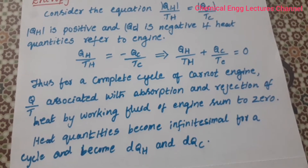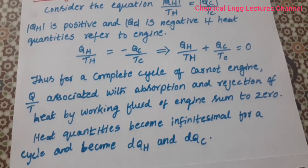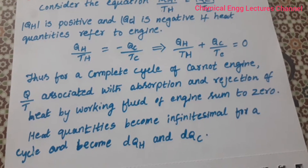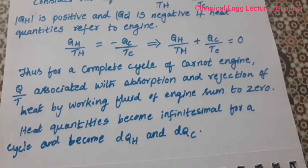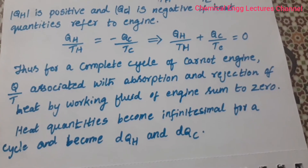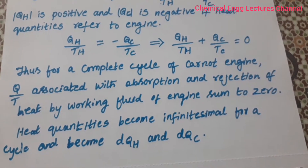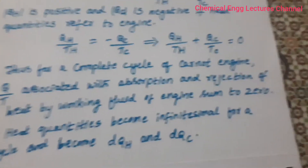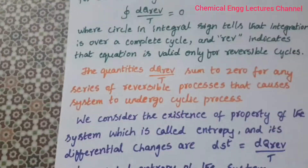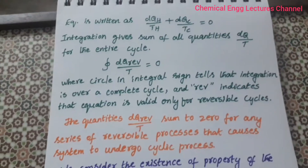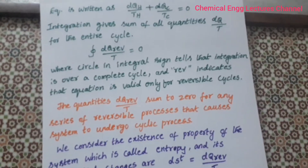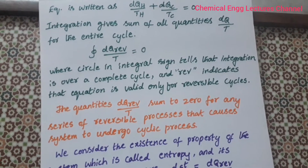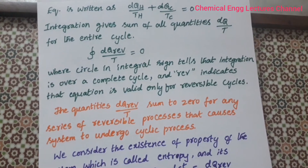For a complete cycle of the Carnot engine, Q by T associated with the absorption and rejection of heat by the working fluid of the engine sums to 0. The heat quantities become infinitesimal for a cycle and become DQH and DQC. The equation is then written as DQH by TH plus DQC by TC is equal to 0.